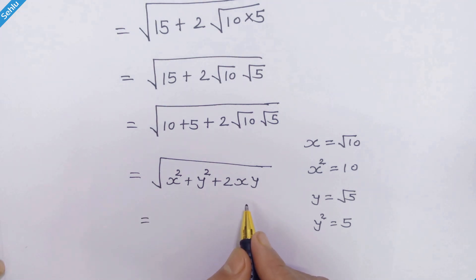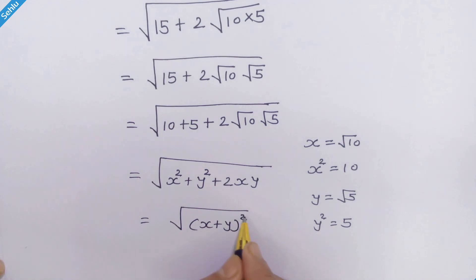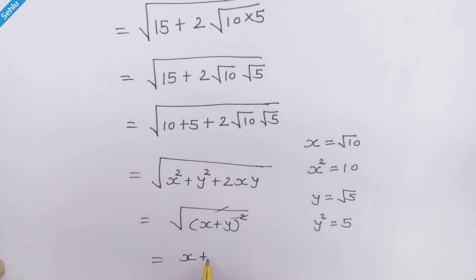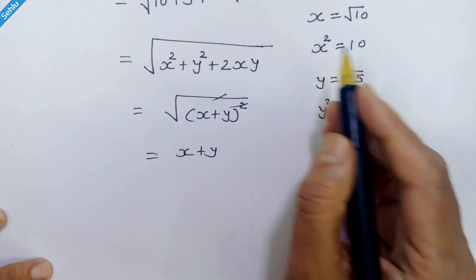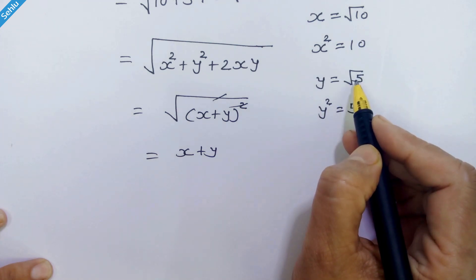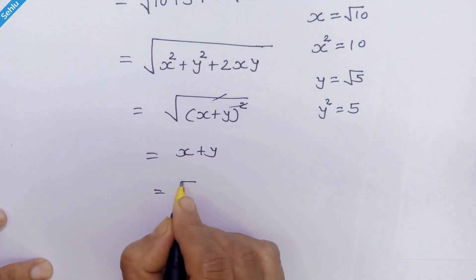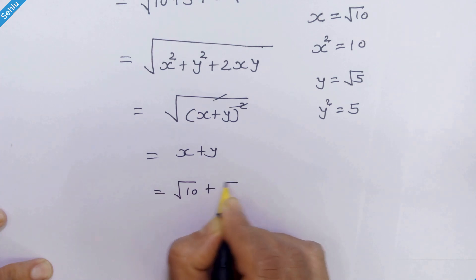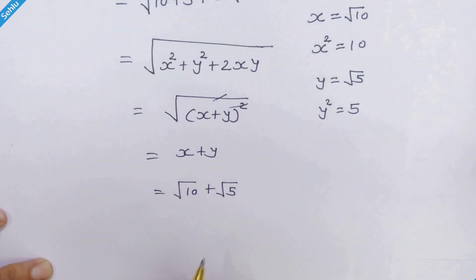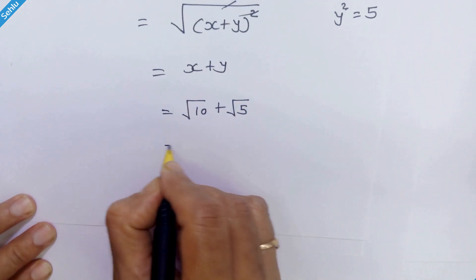This is an identical form, and as we know it can be written as square root of (x plus y) whole squared. The square root and square eliminate, so we have x plus y. Now x equals square root of 10 and y equals square root of 5, so re-applying the original values we have square root of 10 plus square root of 5.